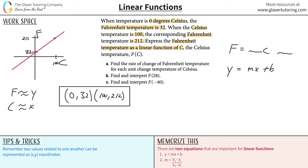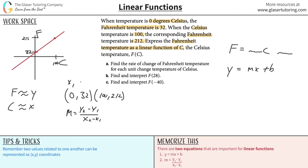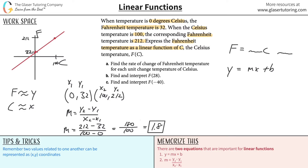Anytime you have two points and they tell you it's a linear function, we can find the slope via the slope formula. The slope equals y2 minus y1 all over x2 minus x1. So let's call (0, 32) as x1, y1 and (100, 212) as x2, y2. Plugging in: the slope equals 212 minus 32 all divided by 100 minus 0. That gives us 180 divided by 100, which is 1.8 — or nine-fifths. So 1.8 is the slope.